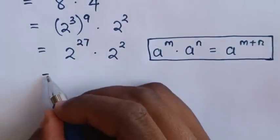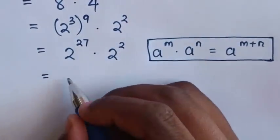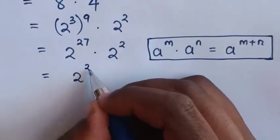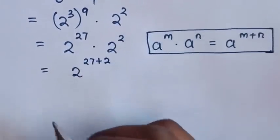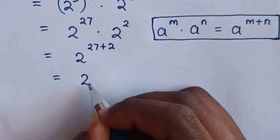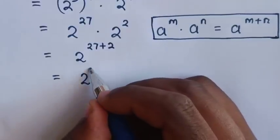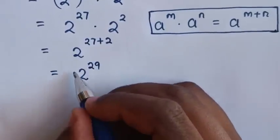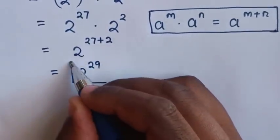Then this will be equal to, addition of powers, so it will be 2 power of 27 plus 2, which equals 2 power 29. This is our final answer.